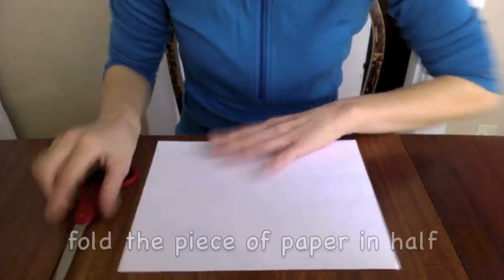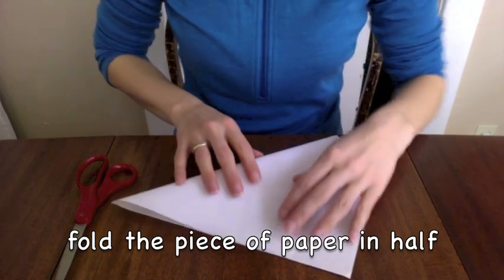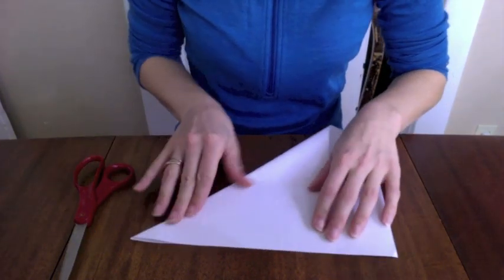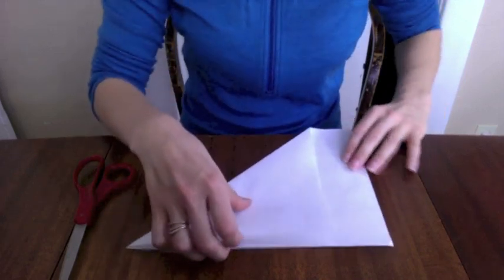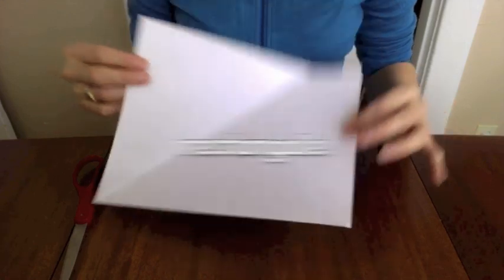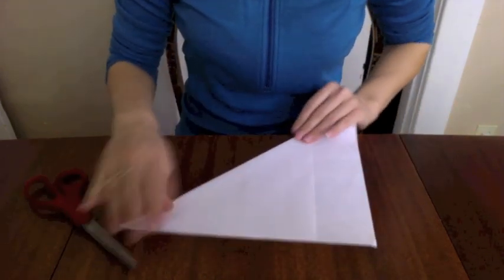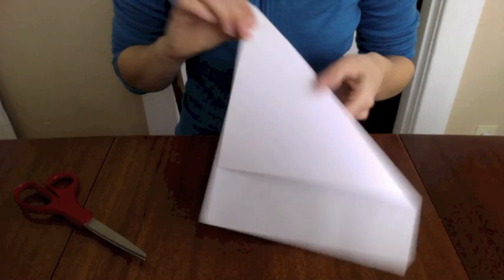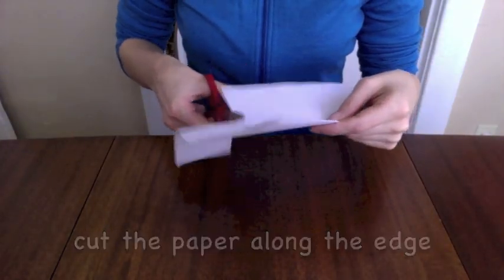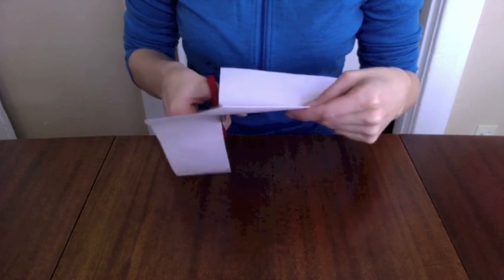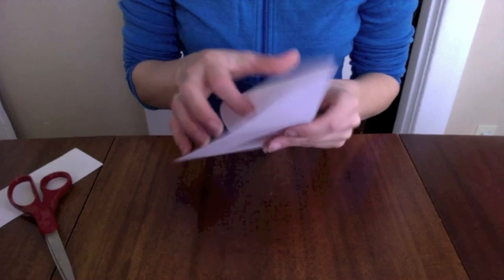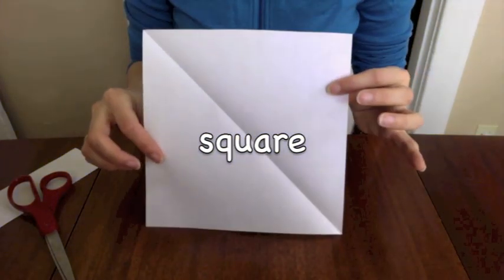To start, we're going to fold the piece of paper in half. Before folding the paper, we have a rectangle. We're going to be cutting the paper to turn it into a square. So cut along the edge and now we have a square piece of paper.